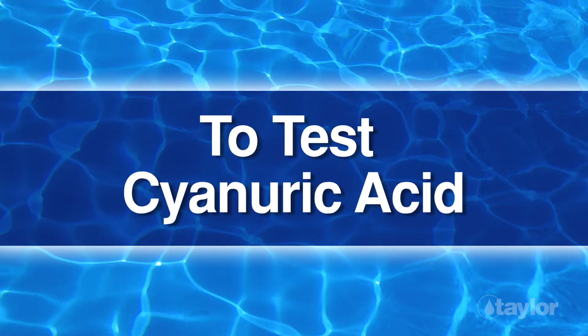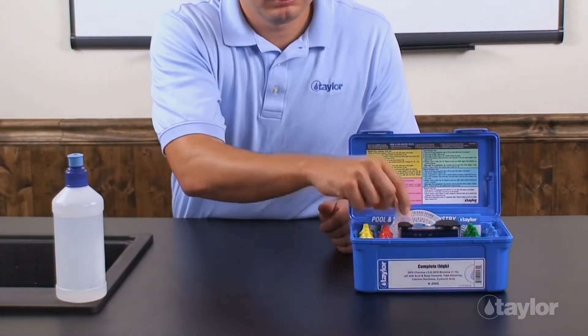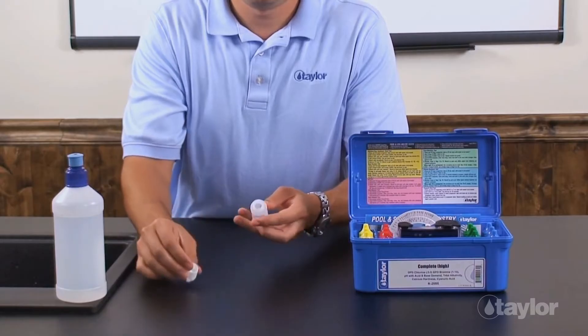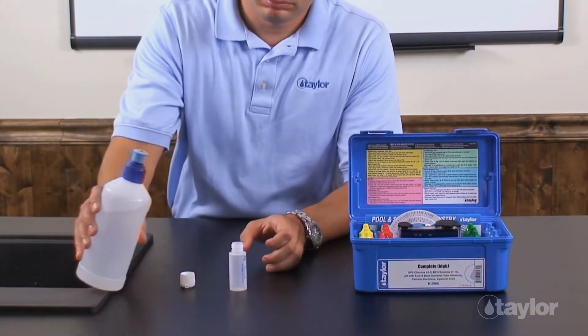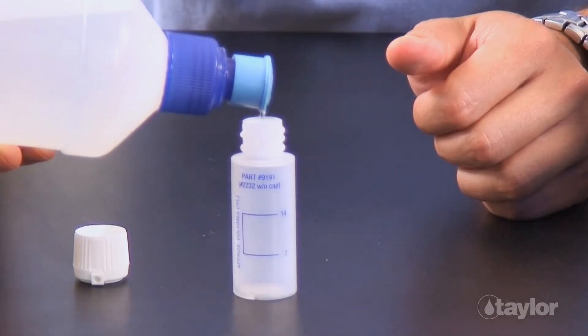To test cyanuric acid, rinse and fill the CYA Dispensing Bottle, number 9191, to the 7 ml mark with the water to be tested.